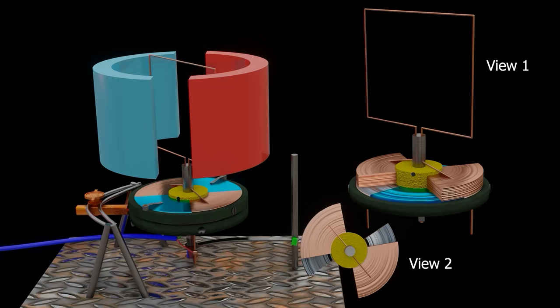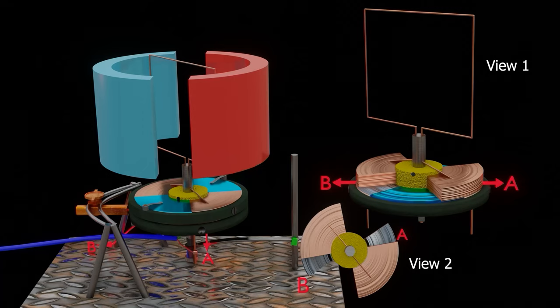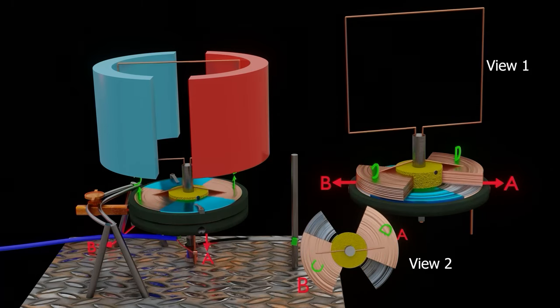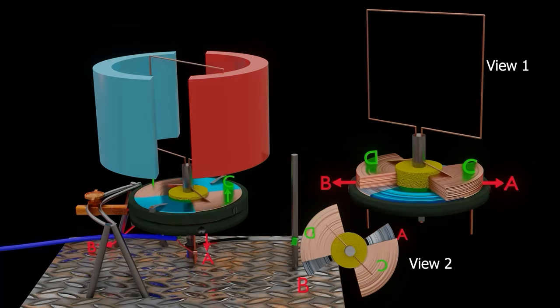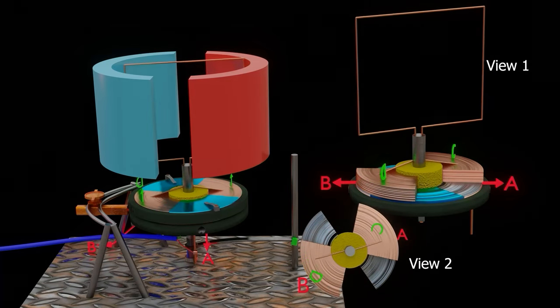For better understanding, we name the collector segments as A, B, and commutator segments as C, D. We can see that for first half rotation, segments A, C, and segments B, D, are in contact.